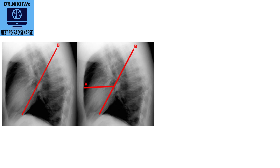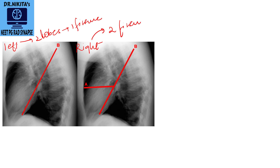Looking at this lateral chest X-ray: which is the left lung and which is the right lung? The left lung has only two lobes — upper and lower — no middle lobe, so it has one fissure. The right lung has three lobes, so it has two fissures. The oblique fissure is common to both and is therefore the major fissure, while the horizontal fissure, present only on the right side, is the minor fissure.